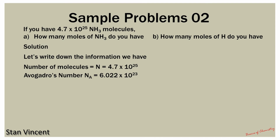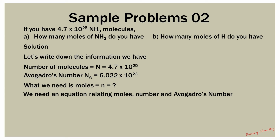Avogadro's number Nₐ is known and the value is 6.022 × 10²³. What we need to calculate is the number of moles, represented by lowercase n. We need an equation relating the total number of molecules and Avogadro's number. The equation is: lowercase n, which represents moles, is equal to uppercase N, which represents the total number of molecules, divided by Nₐ, or Avogadro's number.